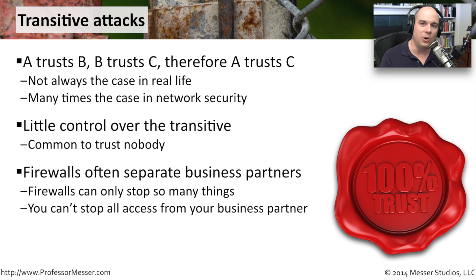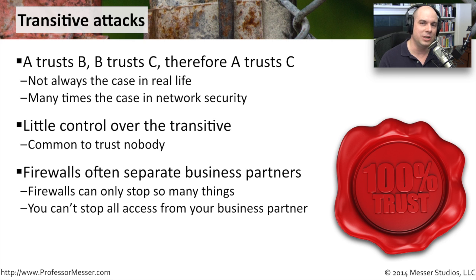But ultimately you've got a hole so that your end users can access that business partner, or the business partner can come into your organization. And unfortunately when you build a hole and build access into a firewall, you can have a lot more than just what you designed coming through that firewall hitting your network. So these transitive attacks are things you must keep in mind whenever you're setting up connections between systems and between organizations.